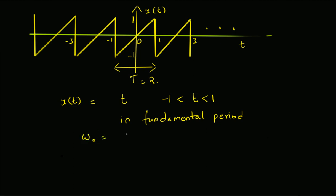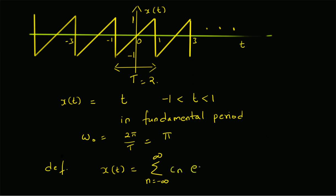The fundamental frequency will be equal to 2π divided by T, where T is equal to 2. So omega naught is equal to π. Now let us look at the definition of the complex exponential Fourier series. By definition, x of t can be written as the summation n equals minus infinity to plus infinity of cₙ times e to the power j·ω₀·n·t. That is the Fourier series expansion of x of t, and we have to find the values of cₙ.